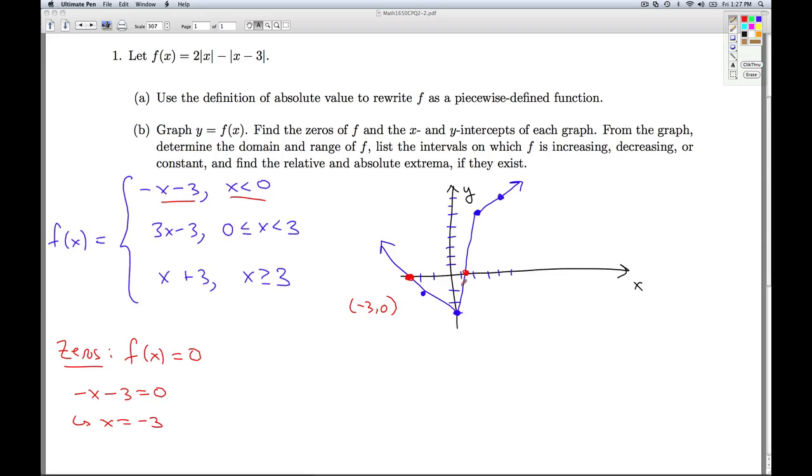Looks like we also get an x-intercept on this part of the function, which corresponds to this guy. So 3x minus 3 is 0, gives us that x equals 1. Which means my graph is a little bit off, that should actually be crossing there right at 1, 0. So the zeros are negative 3 and 1, which gives us the x-intercepts, negative 3, 0 and 1, 0.